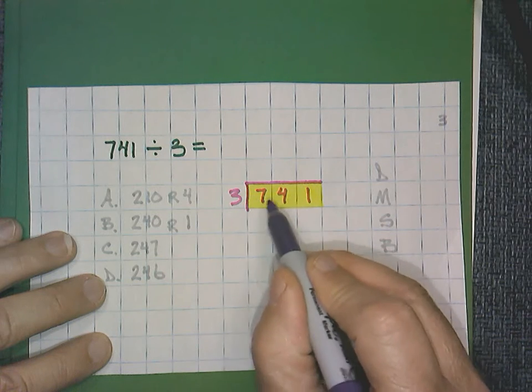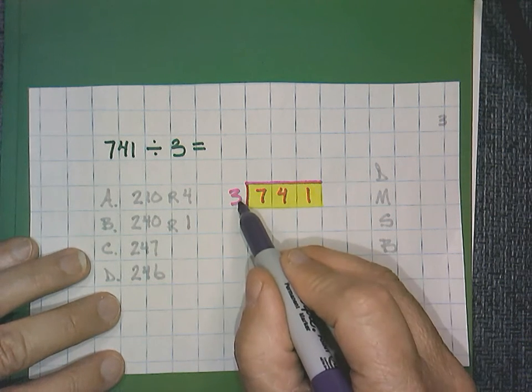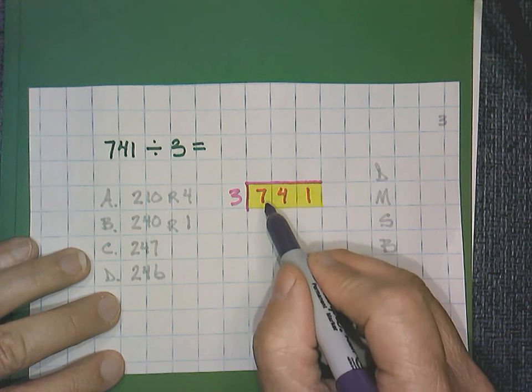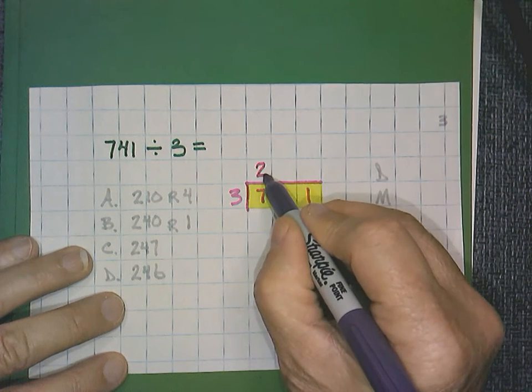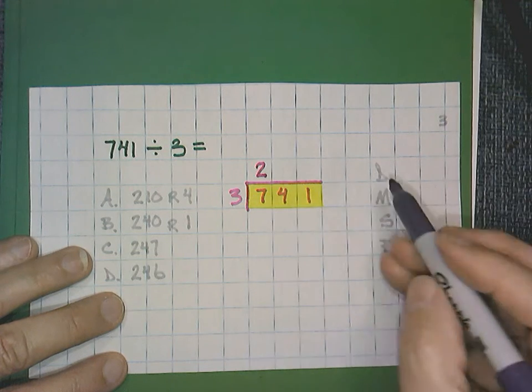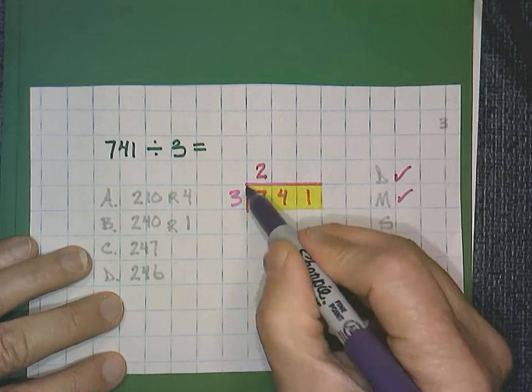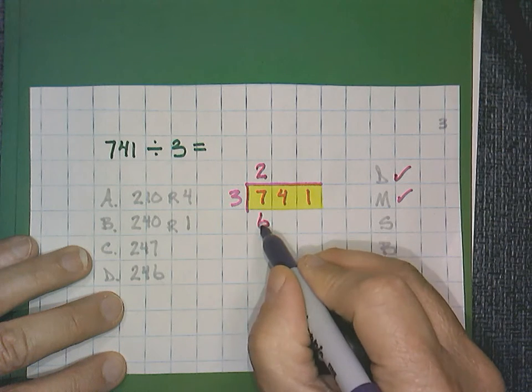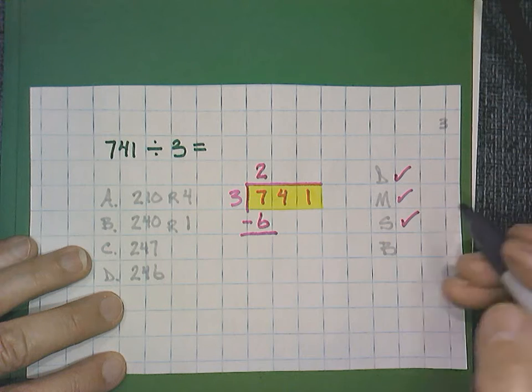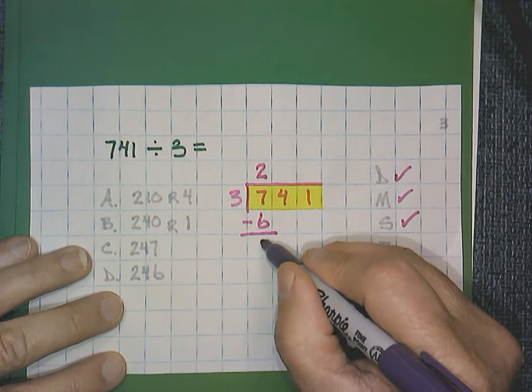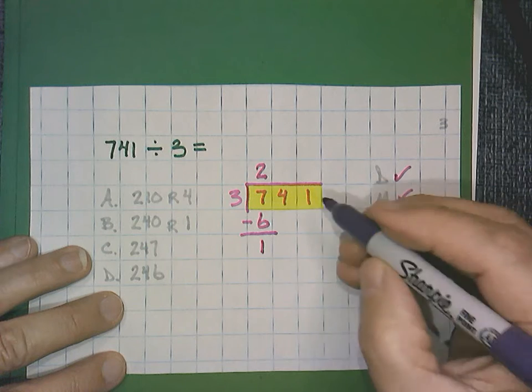I'm going to work from left to right, starting with the 7, digit by digit. 3 does go into 7 two times. Then we multiply. That was our divide step. Then we multiply. 2 times 3 is equal to 6. That brings us to the subtraction step. 7 minus 6 is 1. The B stands for bring down and start over.